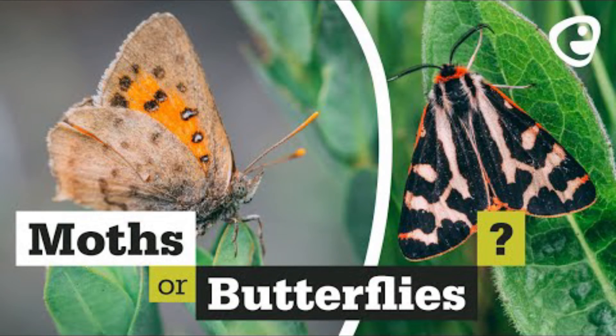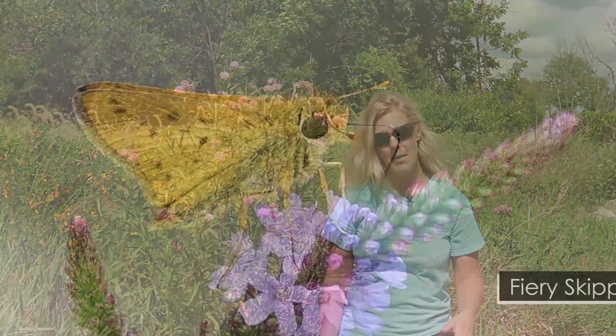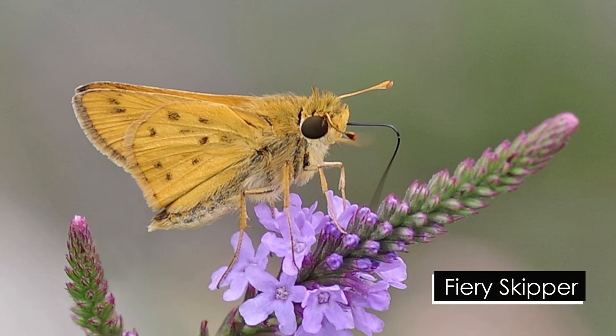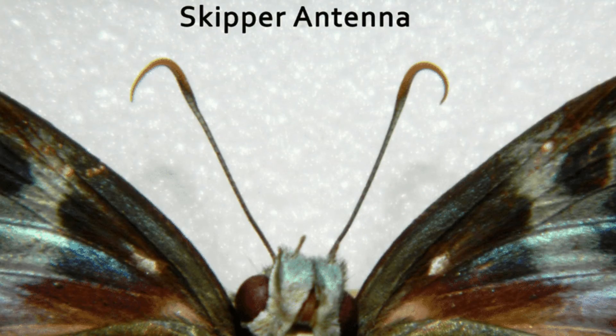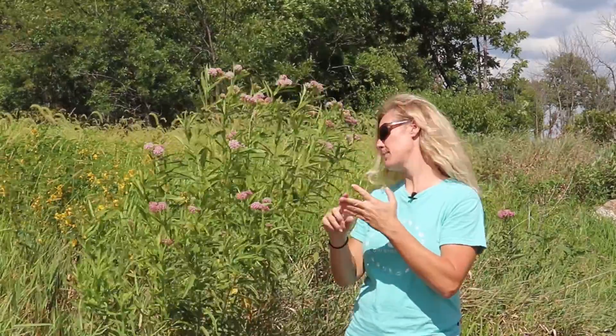Have you ever heard of a skipper? A skipper is another type of insect in the Lepidoptera order. They also have thread-like antennae, but with a slightly different structure at the end — they have bulbs but also a hook-like structure. So you have moths, butterflies, and skippers in the Lepidoptera order.